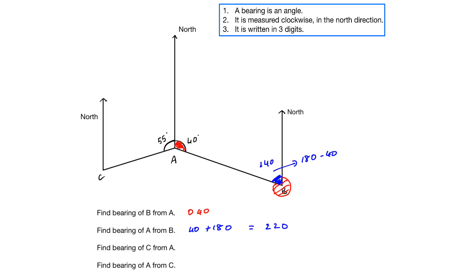So this angle is 140. And since the angles at a point equal 360, to find the bearing — the outside part — you subtract 140 from 360, giving 220. So both methods give the same answer: 220. I hope that's clear.